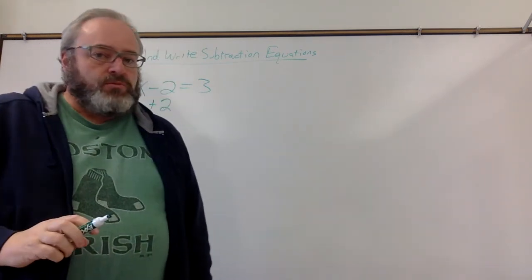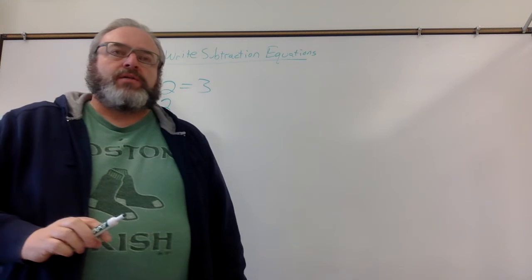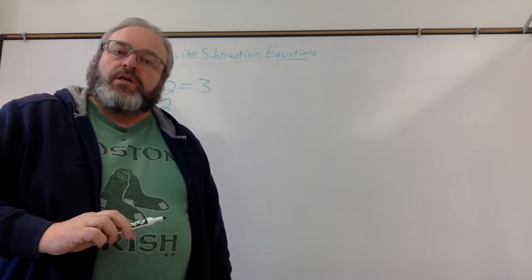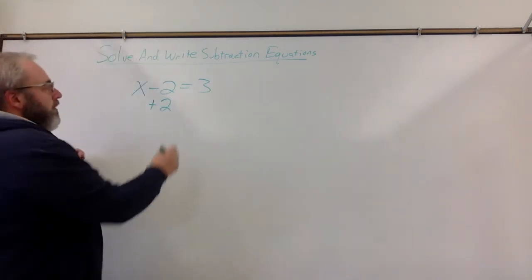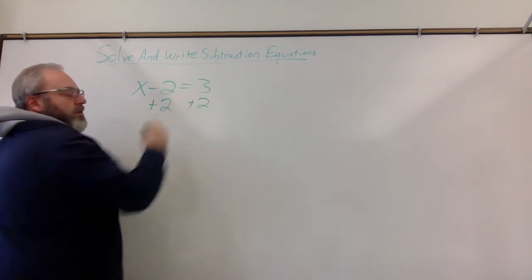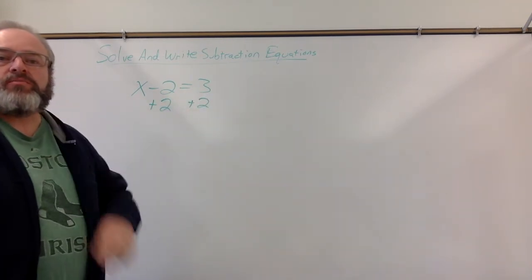So I'm going to add 2 to that side of the equation. Now, there's a rule, which I know you're aware of, that says whatever you do to one side of an equation, you have to do to the other side, too. So underneath the 3, I'm also going to write plus 2.